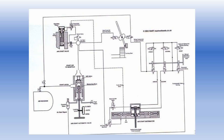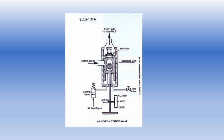Before we get to know the working of the air start system, we have to know the purpose and function of each individual component. For that, we initially take the main air start automatic valve. The hand wheel is rotated and the spindle is bolted to the manual closed position when the ship is finished with the engines or the engines are no longer needed. Hence the spindle is pressed against the seat and no air passes through the valve.